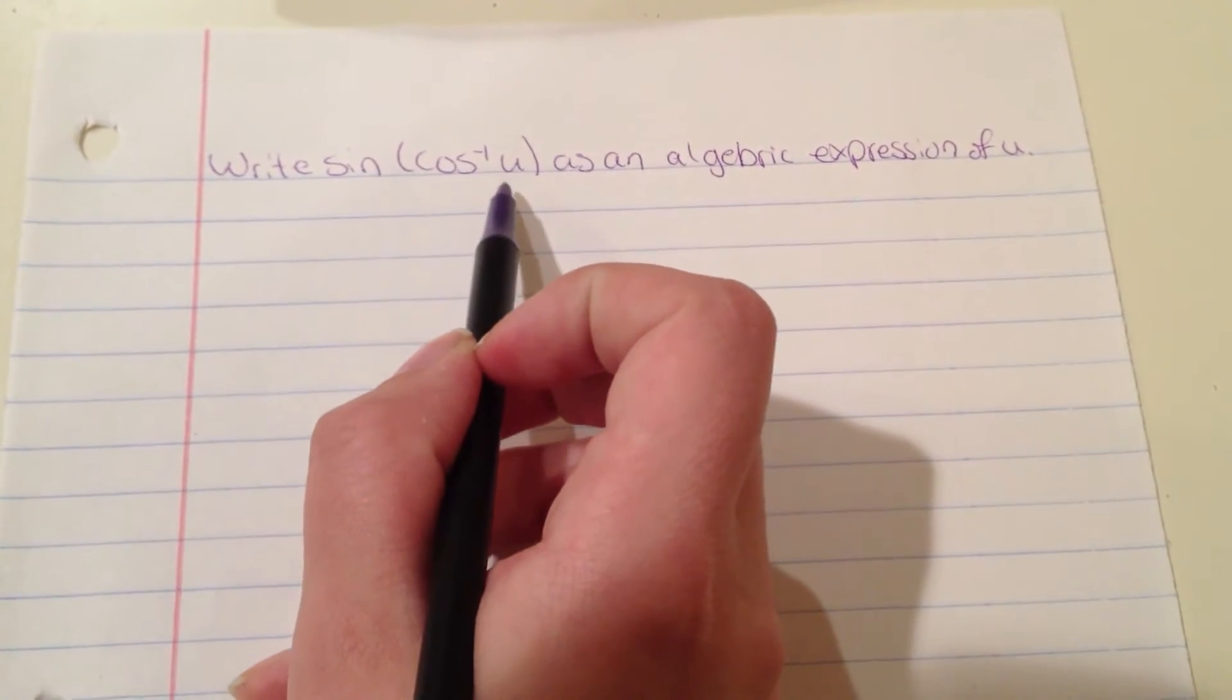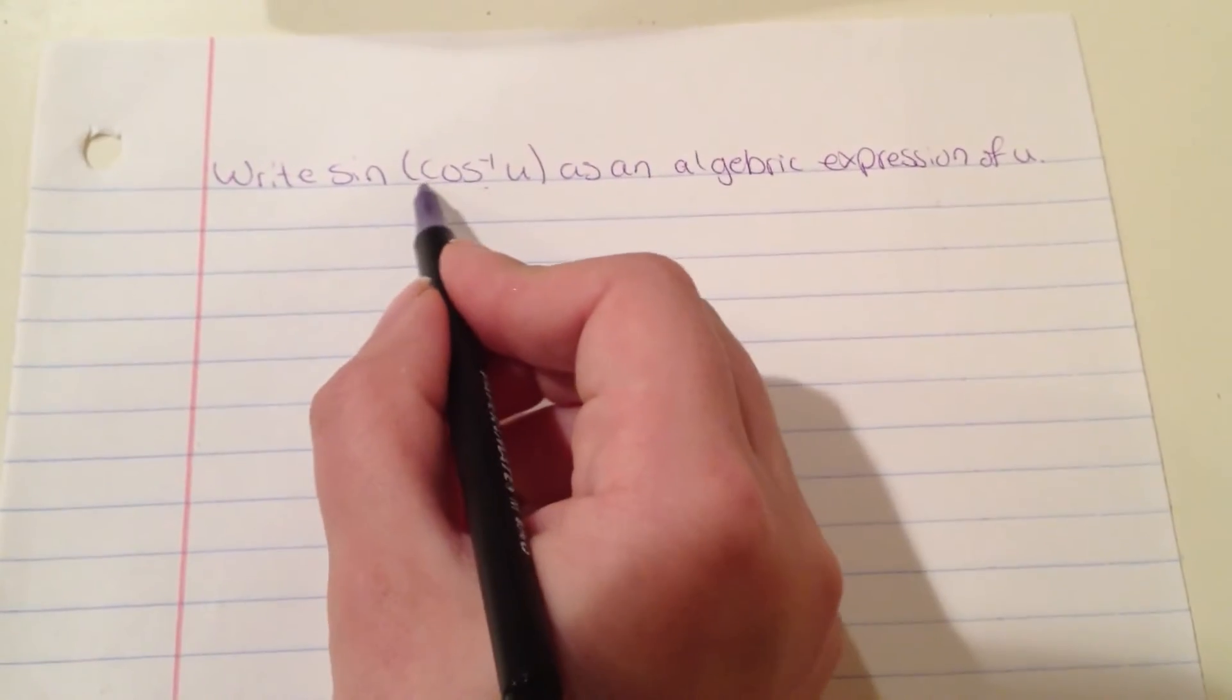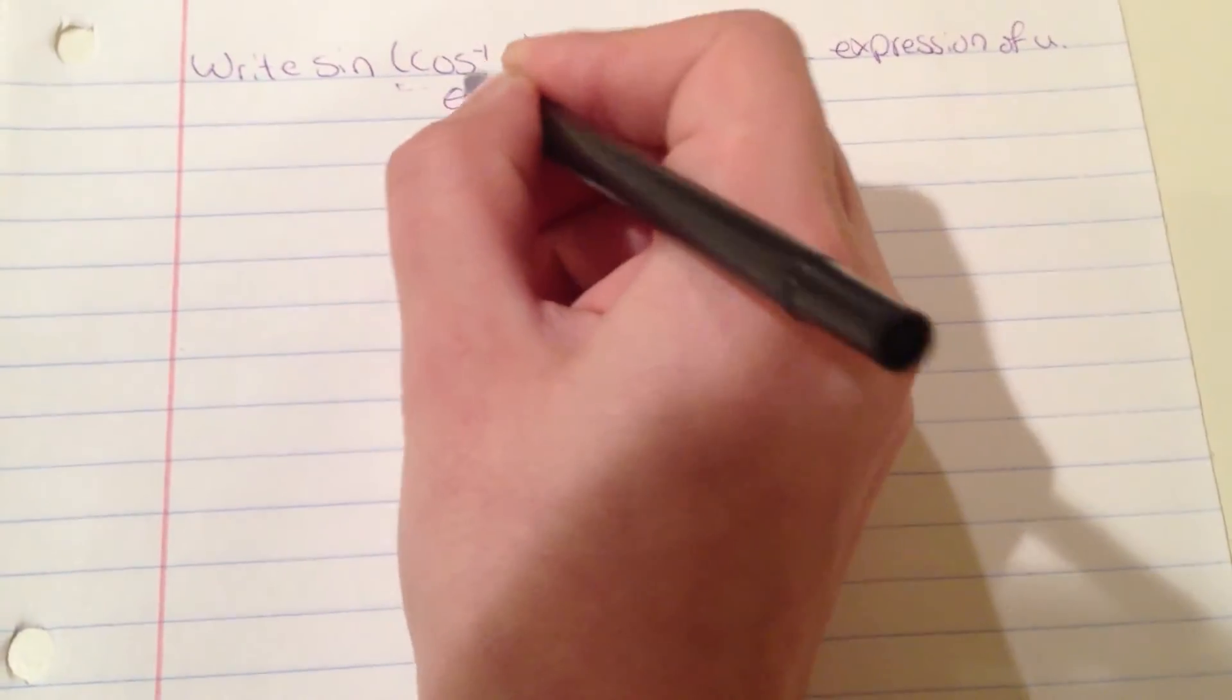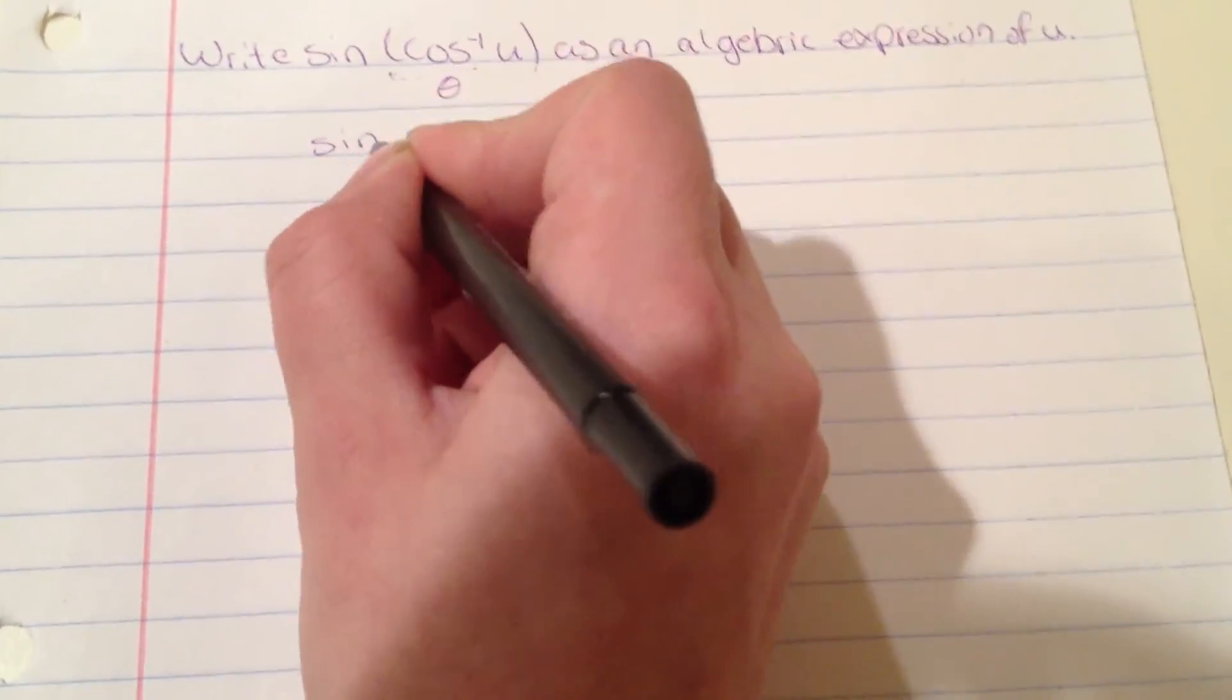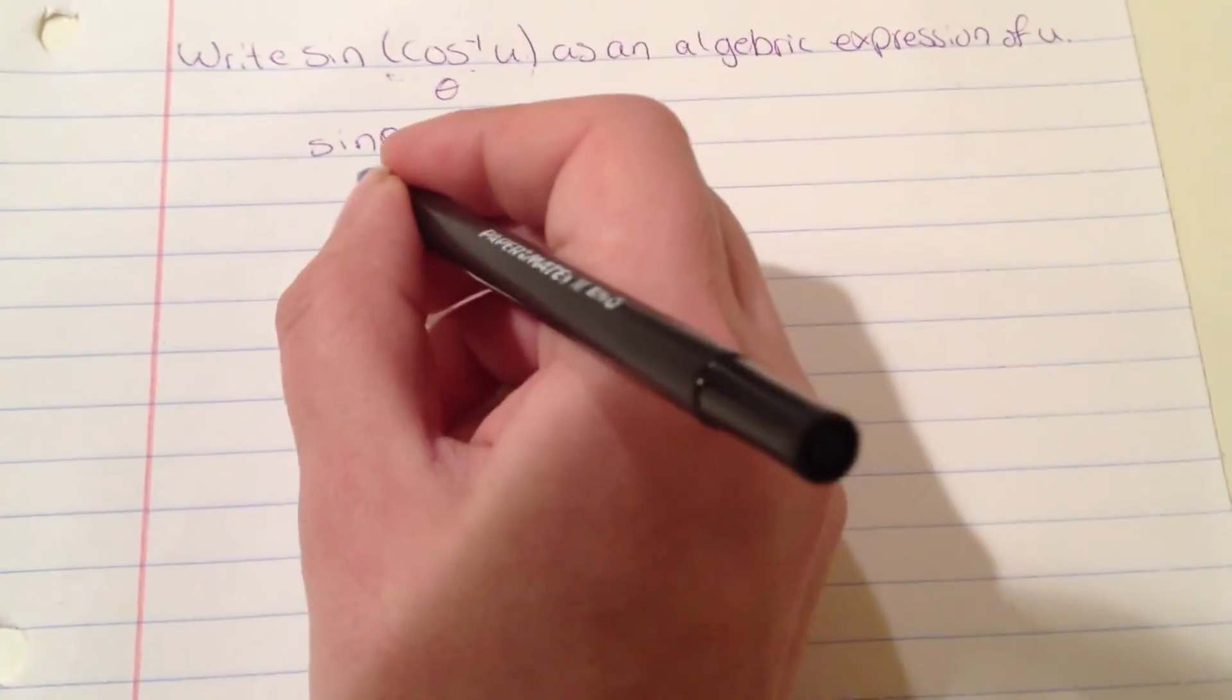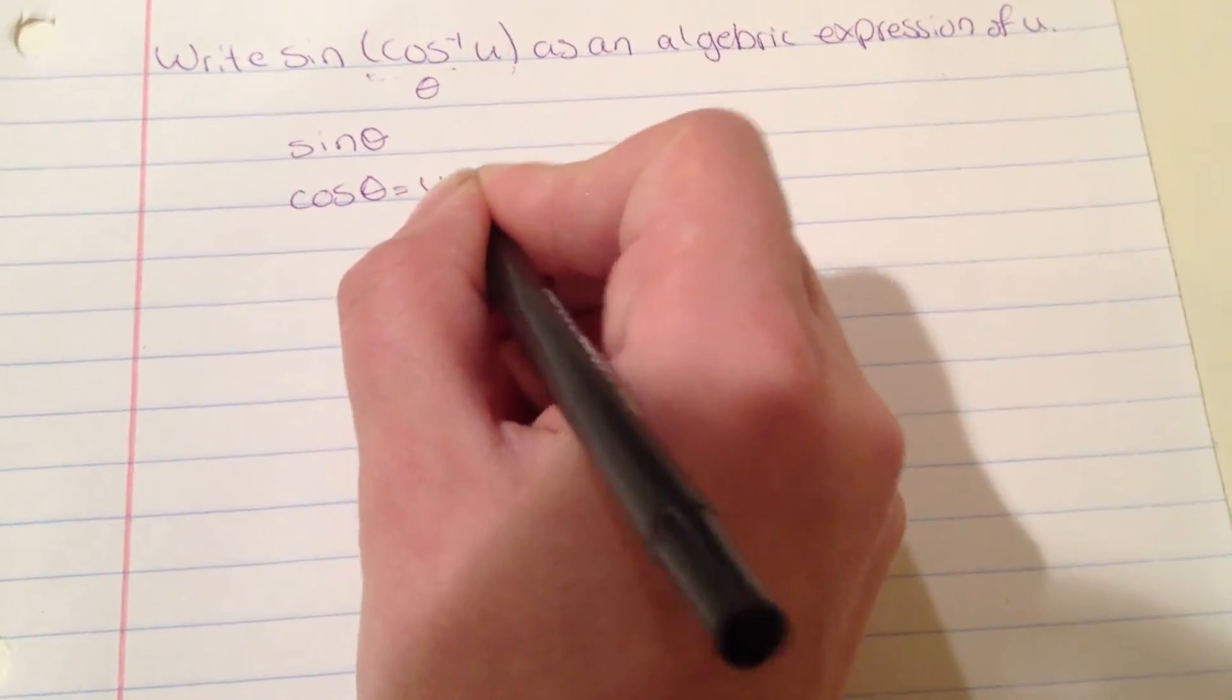Write sine of cosine inverse of u as an algebraic expression of u. We're going to set this equal to theta, so it's going to be sine of theta. And this one is equal to cosine of theta equals u.